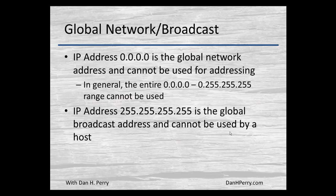There is a global broadcast network, and that's the network zero range. It again uses the entire range and it can't be used for general IP addressing because of the way it's used. The zero address is the global network address, and at the other end, 255.255.255.255 is the global broadcast address — it can't be used by a host either.